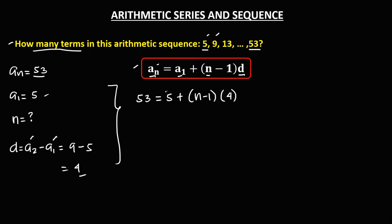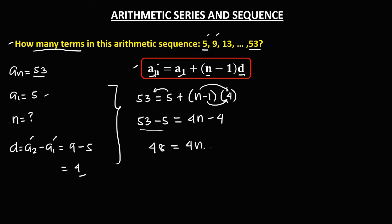To solve for n, transpose this positive 5, so it becomes negative 5. Then multiply out: n times 4 is 4n, and negative 1 times 4 is negative 4. So 53 minus 5 equals 48, giving us 48 equals 4n minus 4.